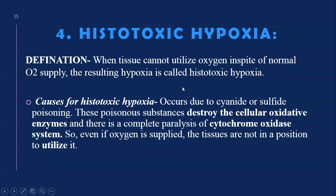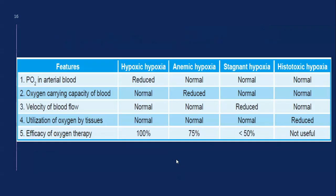Histotoxic hypoxia occurs due to cyanide or sulfide poisoning. These poisonous substances destroy the cellular oxidative enzymes and cause complete paralysis of the cytochrome system. So even if oxygen is supplied, the tissues are not in a position to utilize it. The partial pressure, carrying capacity, and velocity of blood flow are all normal, but cellular utilization is reduced. Oxygen therapy is not useful in this type.